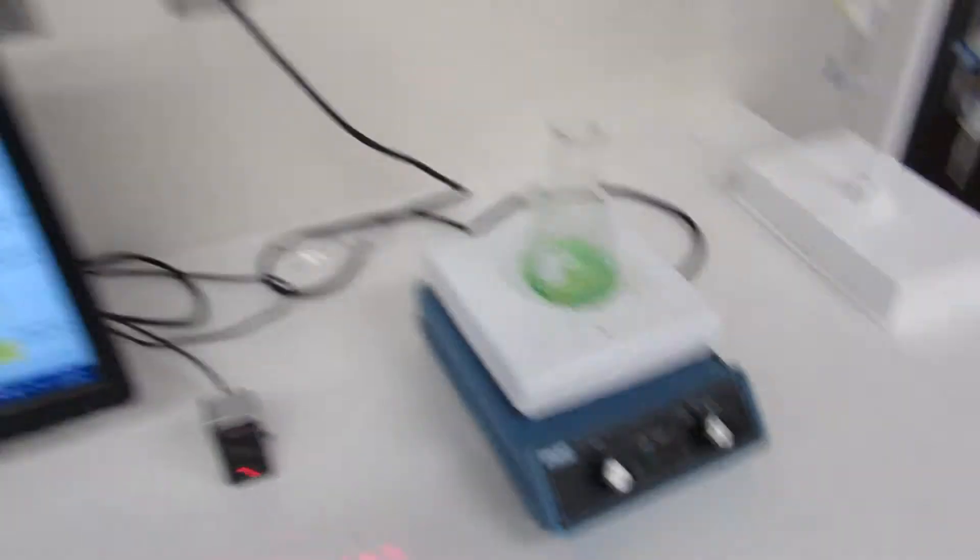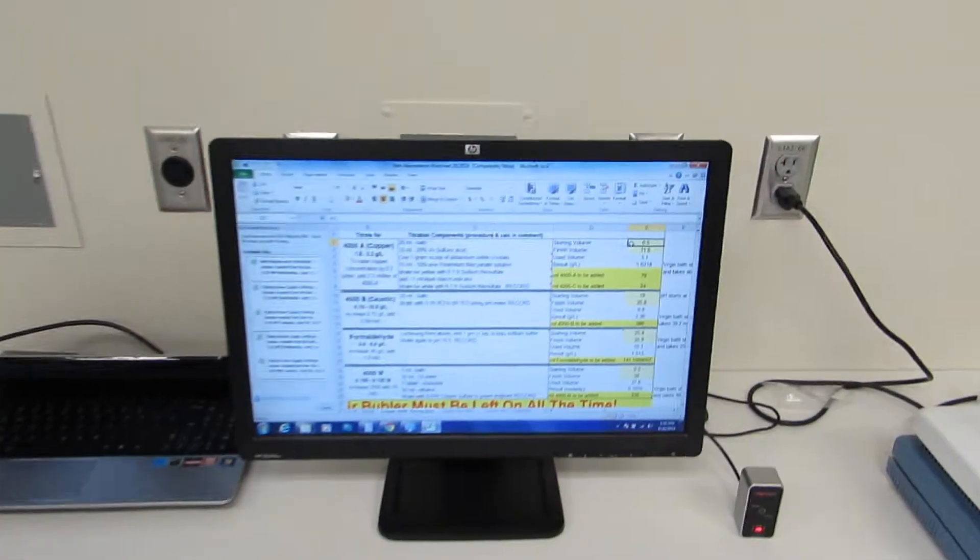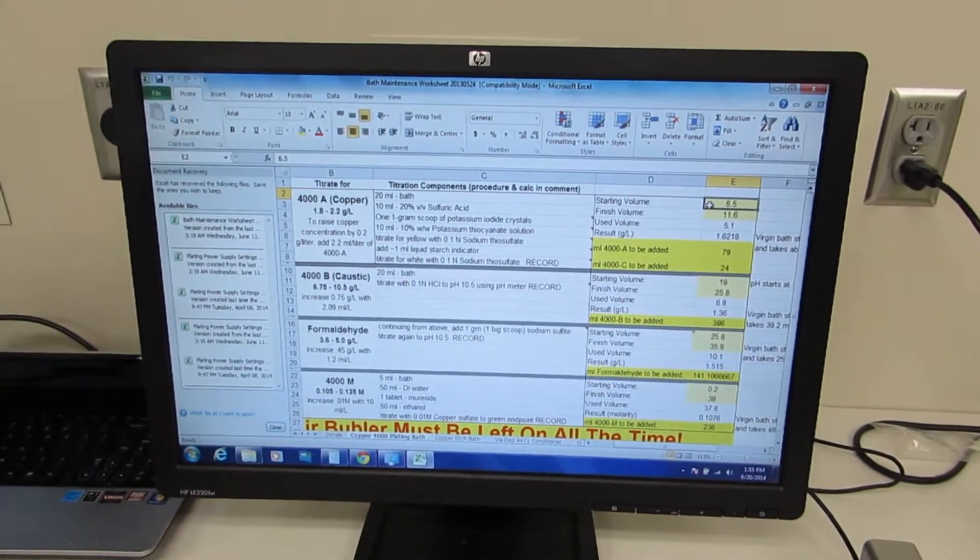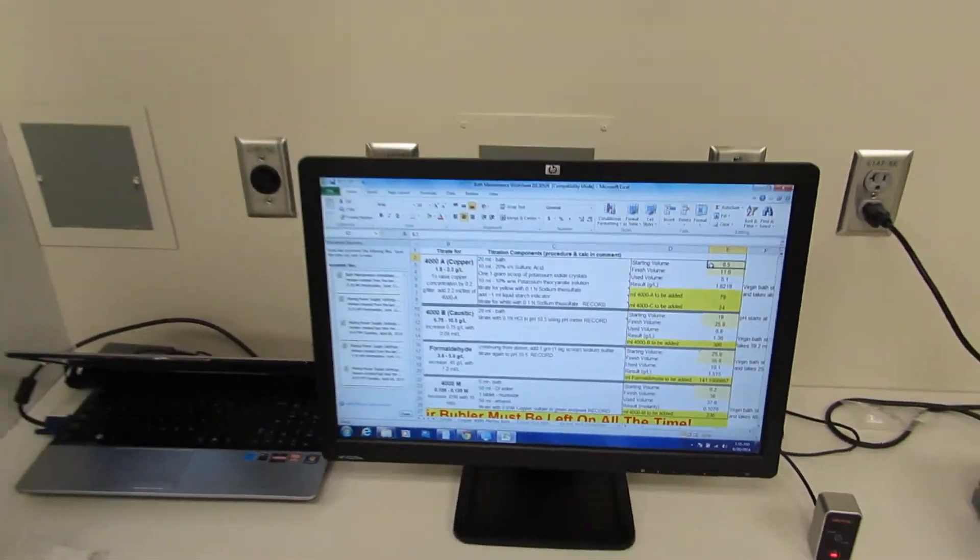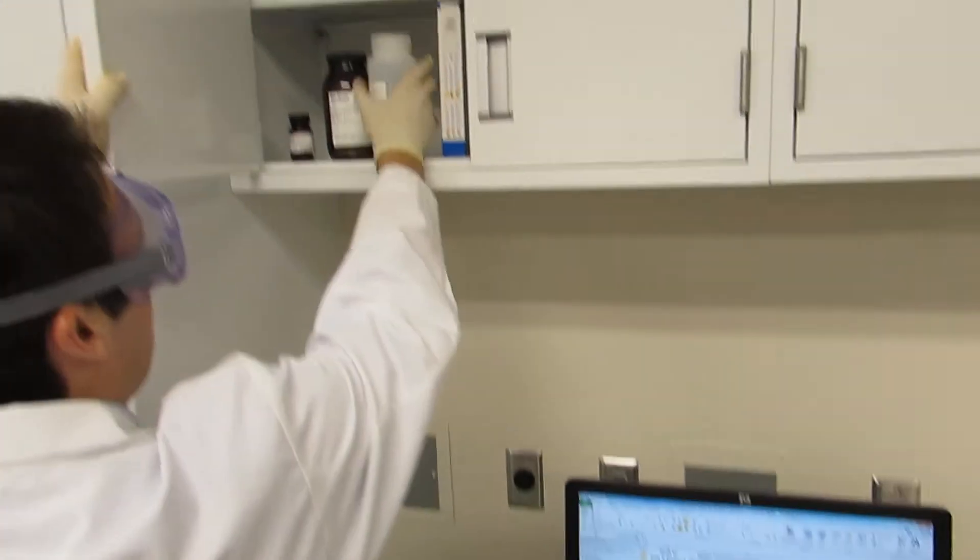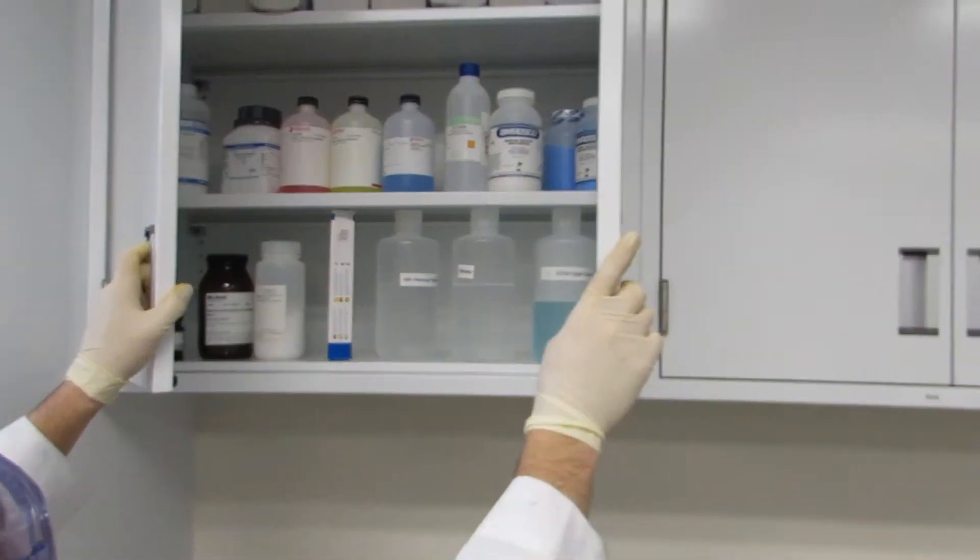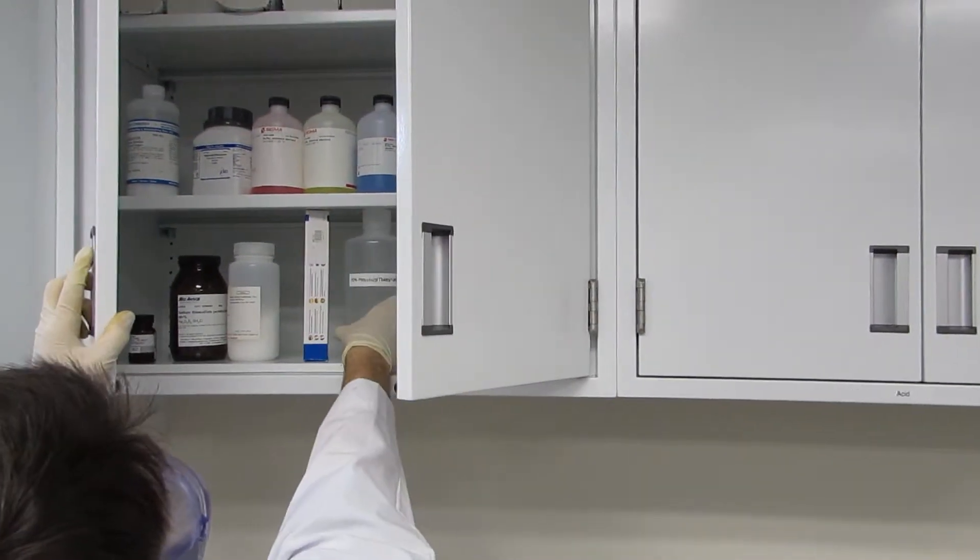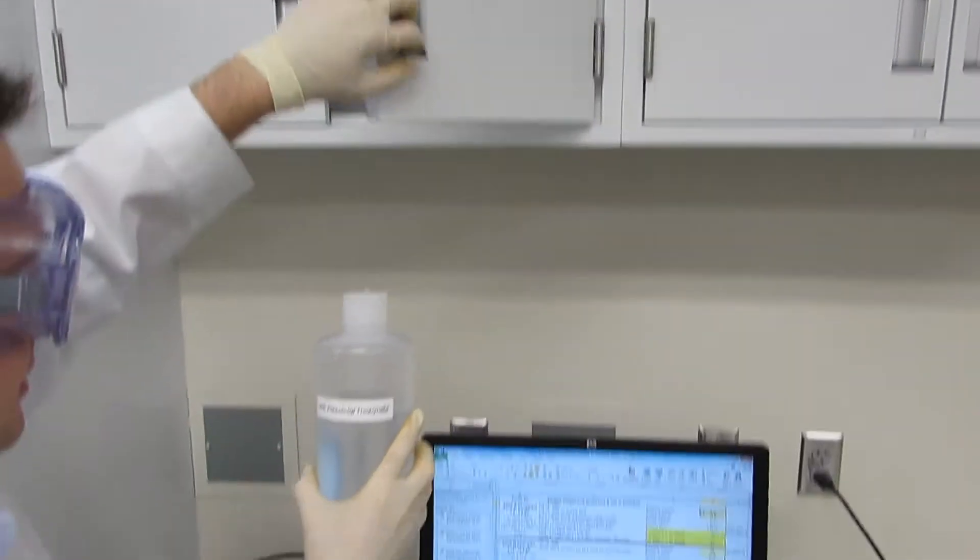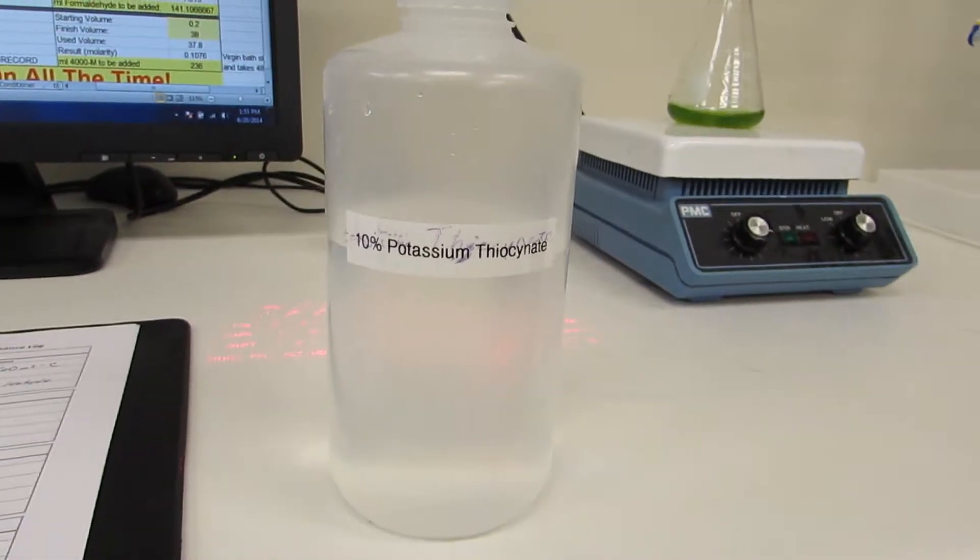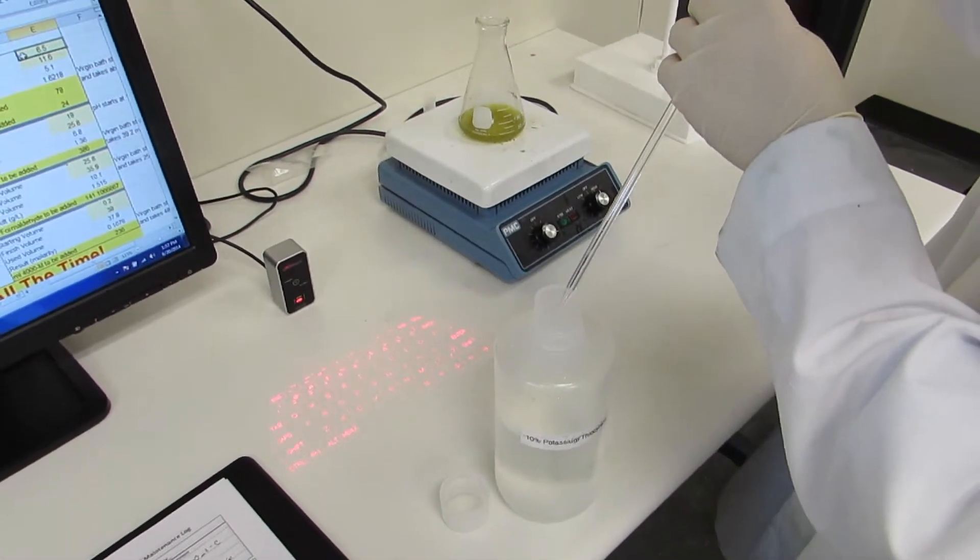Next it says we need 10 milliliters of 10% potassium thiocyanide solution. That is also kept in the solvent cabinet. Add the potassium thiocyanide.